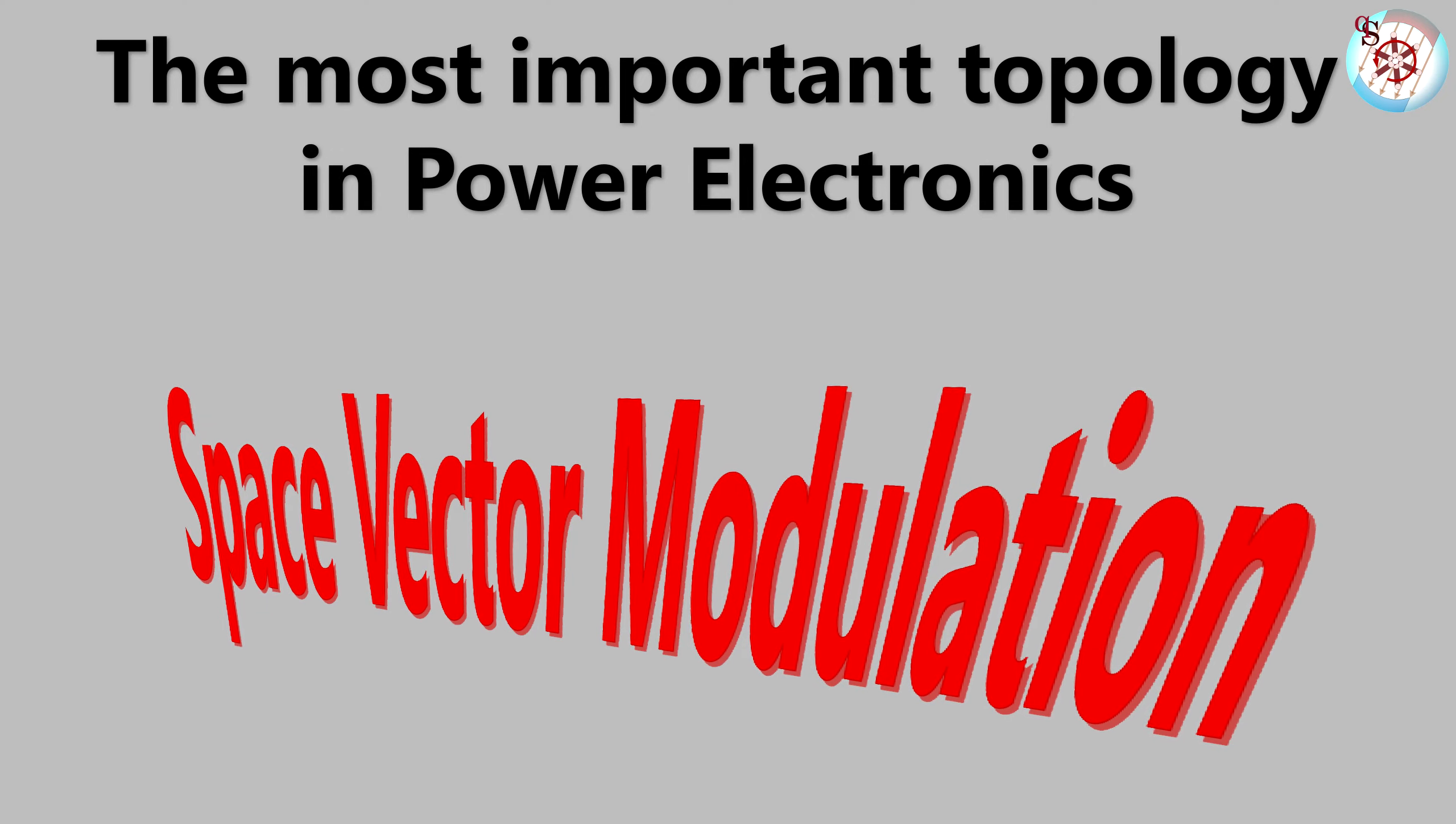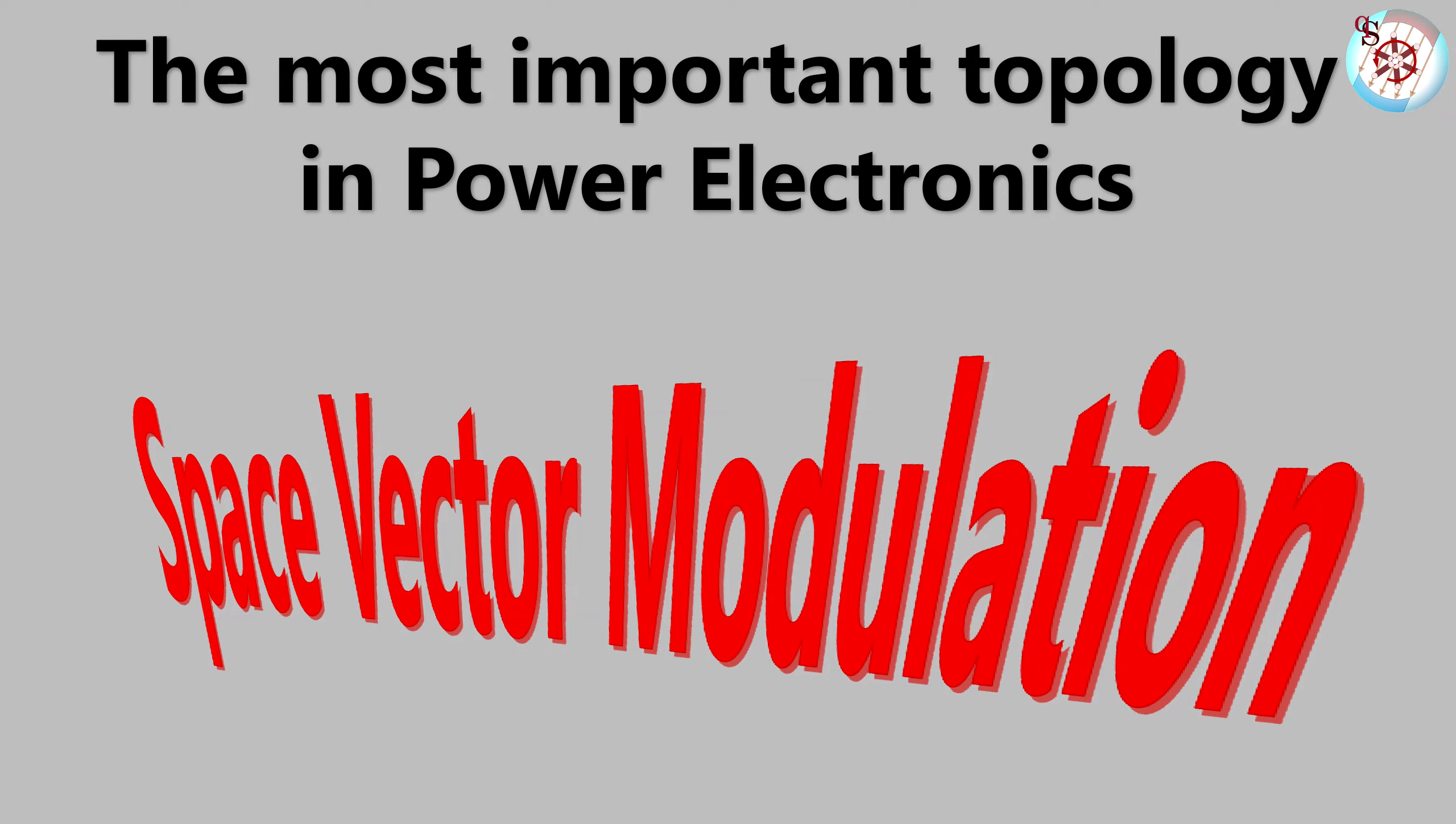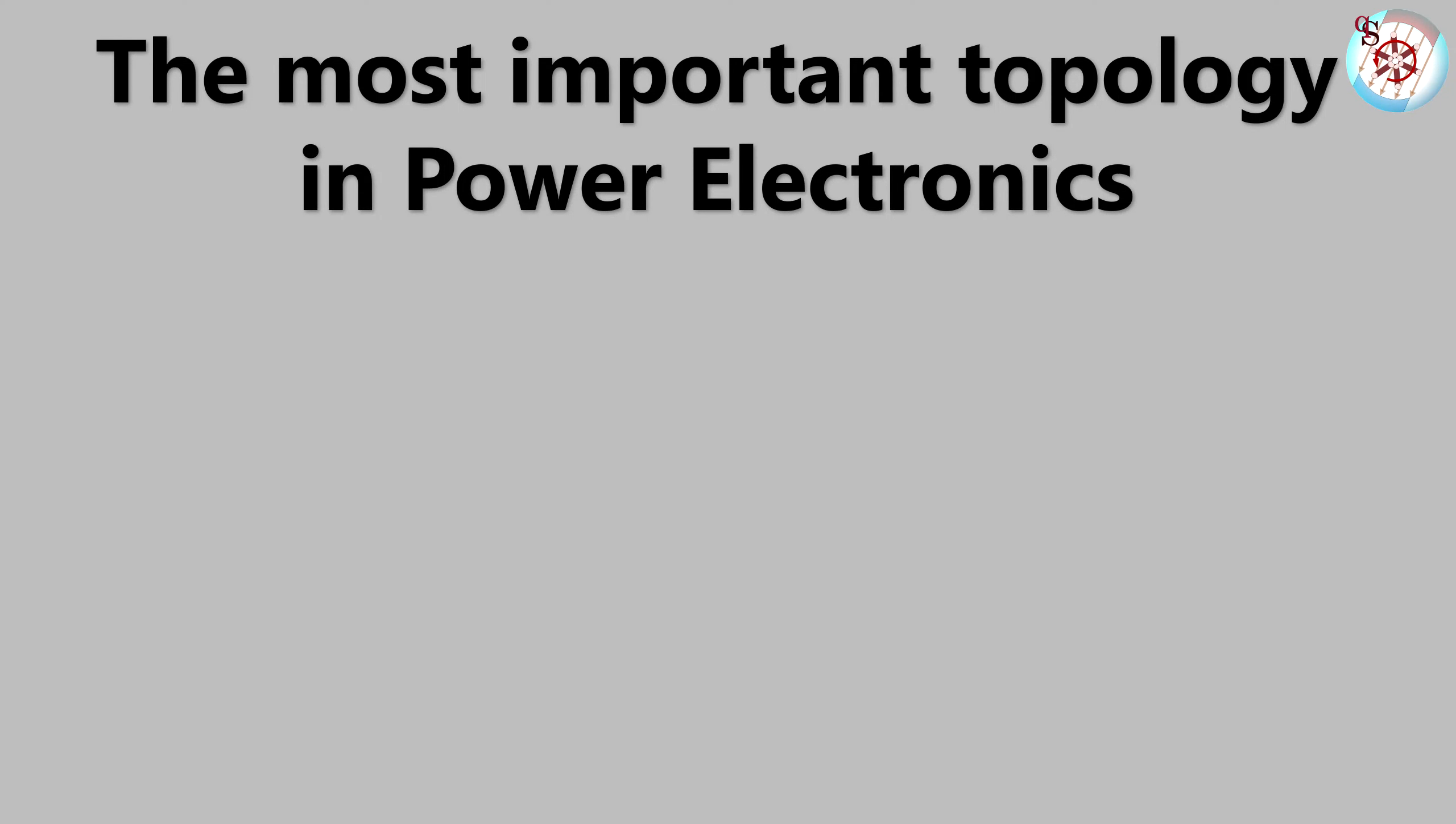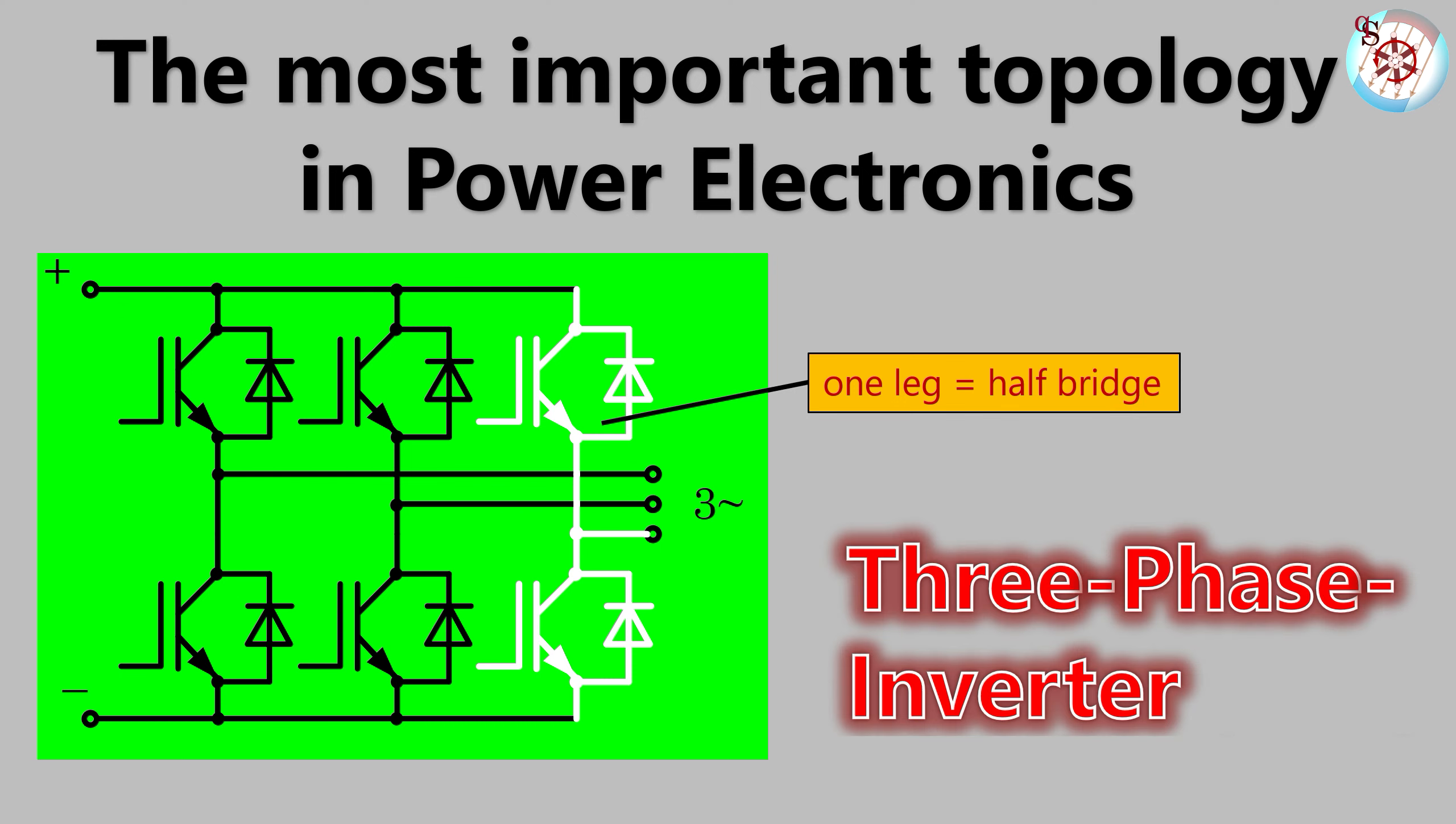How this modulation is done and why it is so closely connected to one topology, we'll find out within the next minutes. So what is the most important topology in power electronics? It is this half bridge comprising two transistor switches, also known as LEG. With just three of those LEGs, we get the three phase inverter and its most commonly utilized variant, the voltage source inverter.